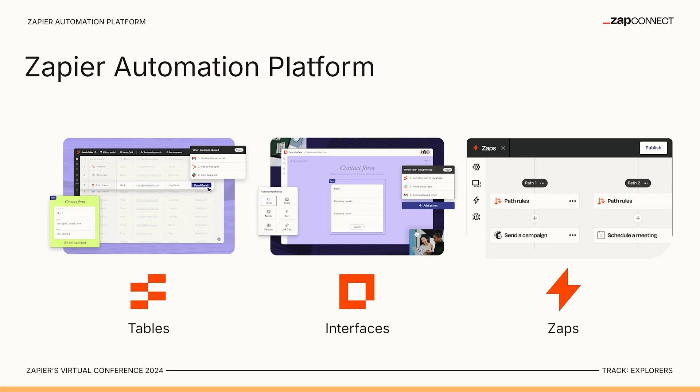These are the products in the Zapier automation platform. If you're not familiar with them yet, we have Tables, Interfaces, and Zaps. I like to use the bones, skin, brain framework anytime I'm thinking about building something in Zapier, and here's what that means.